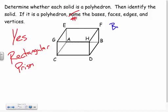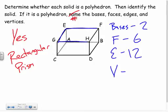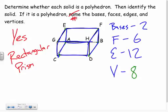For the rectangular prism: bases (B) = 2, since prisms always have two bases. Faces (F) = 6 — top, bottom, both sides, front, and back. Edges (E) = 12 — counting all segments around the shape. Vertices (V) = 8 — four on the bottom and four on the top.